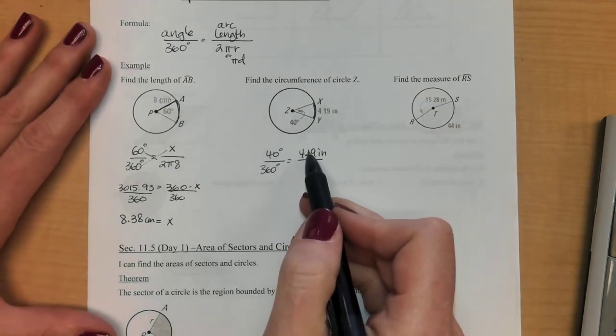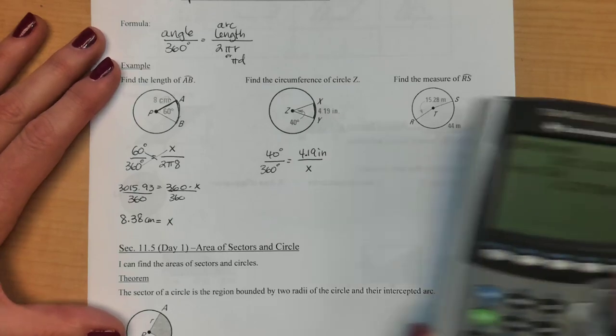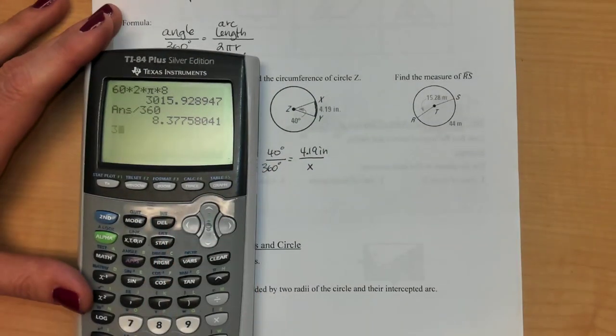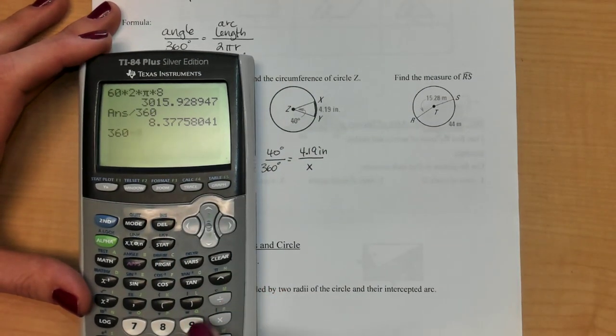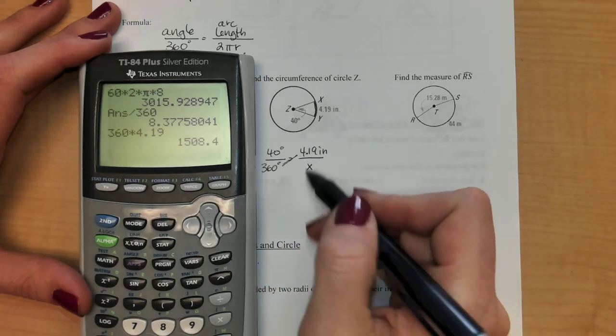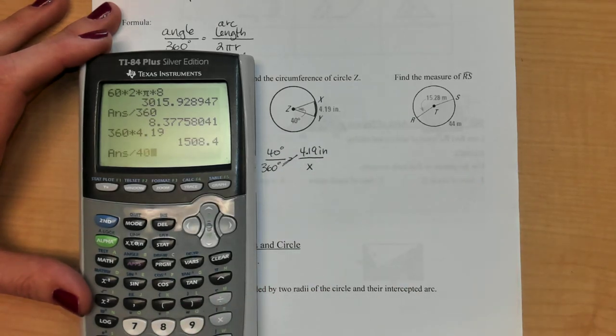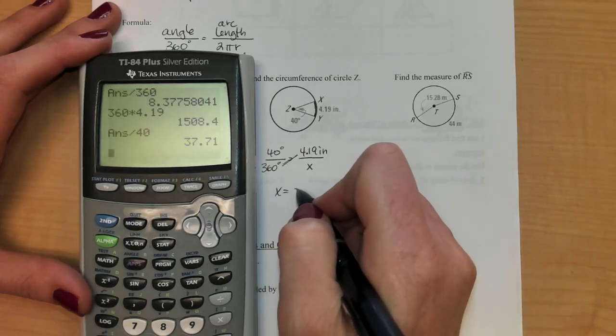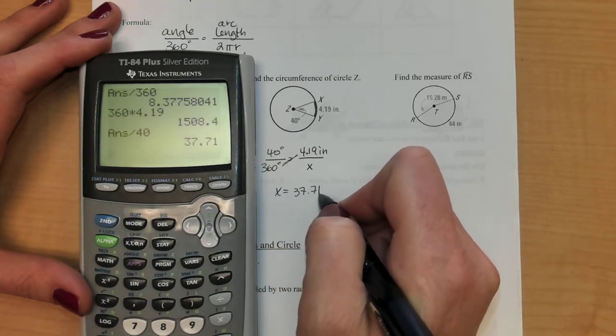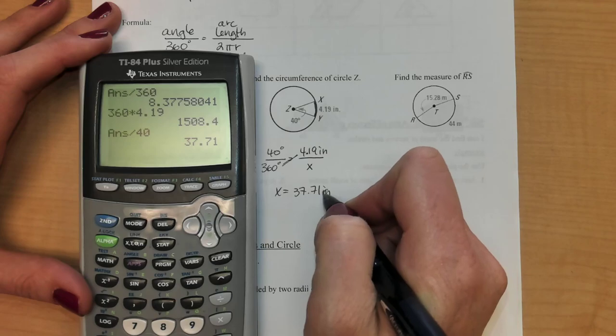And now this is a pretty simple just cross multiply and divide type problem. So I'm going to take 360 times by 4.19. So I'm just multiplying these two and then I'm going to divide by 40. So it looks like my circumference is 37.71 inches, almost wrote centimeters.